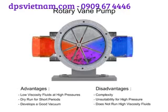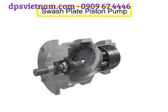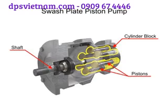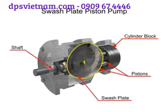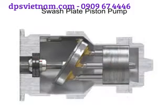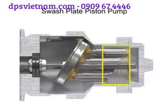Piston pumps come in many different forms. A swash plate is a device used to translate the motion of a rotating shaft into the reciprocating motion of a piston. Swash plate piston pumps have a rotating shaft connected to a cylinder block containing pistons, which are pressed against a stationary swash plate that sits at an angle to the cylinder. As the shaft rotates, the pistons move against the swash plate, causing them to reciprocate within the piston block.